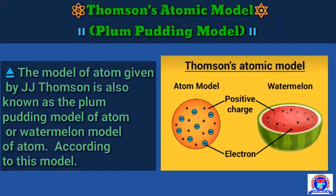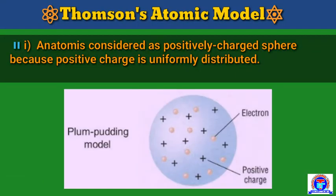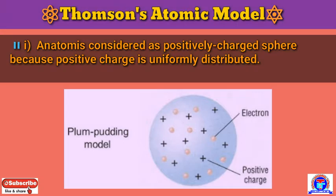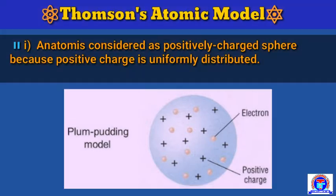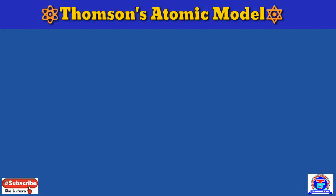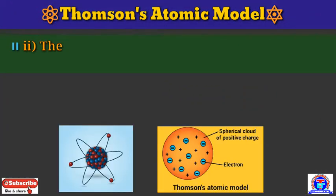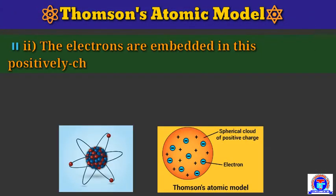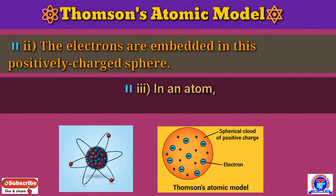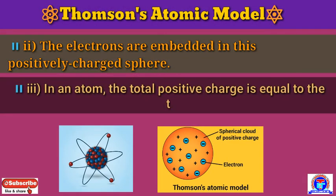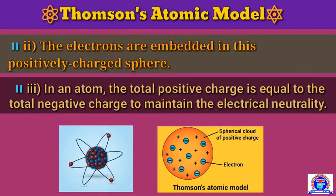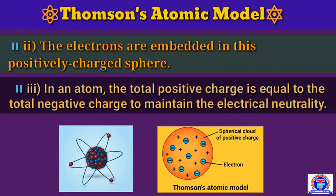The model of the atom by J.J. Thomson is also known as the plum pudding model or watermelon model of the atom. According to this model: number one, an atom is considered as a positively charged sphere because positive charge is uniformly distributed; number two, the electrons are embedded in this positively charged sphere; number three, the total positive charge is equal to the total negative charge to maintain electrical neutrality.